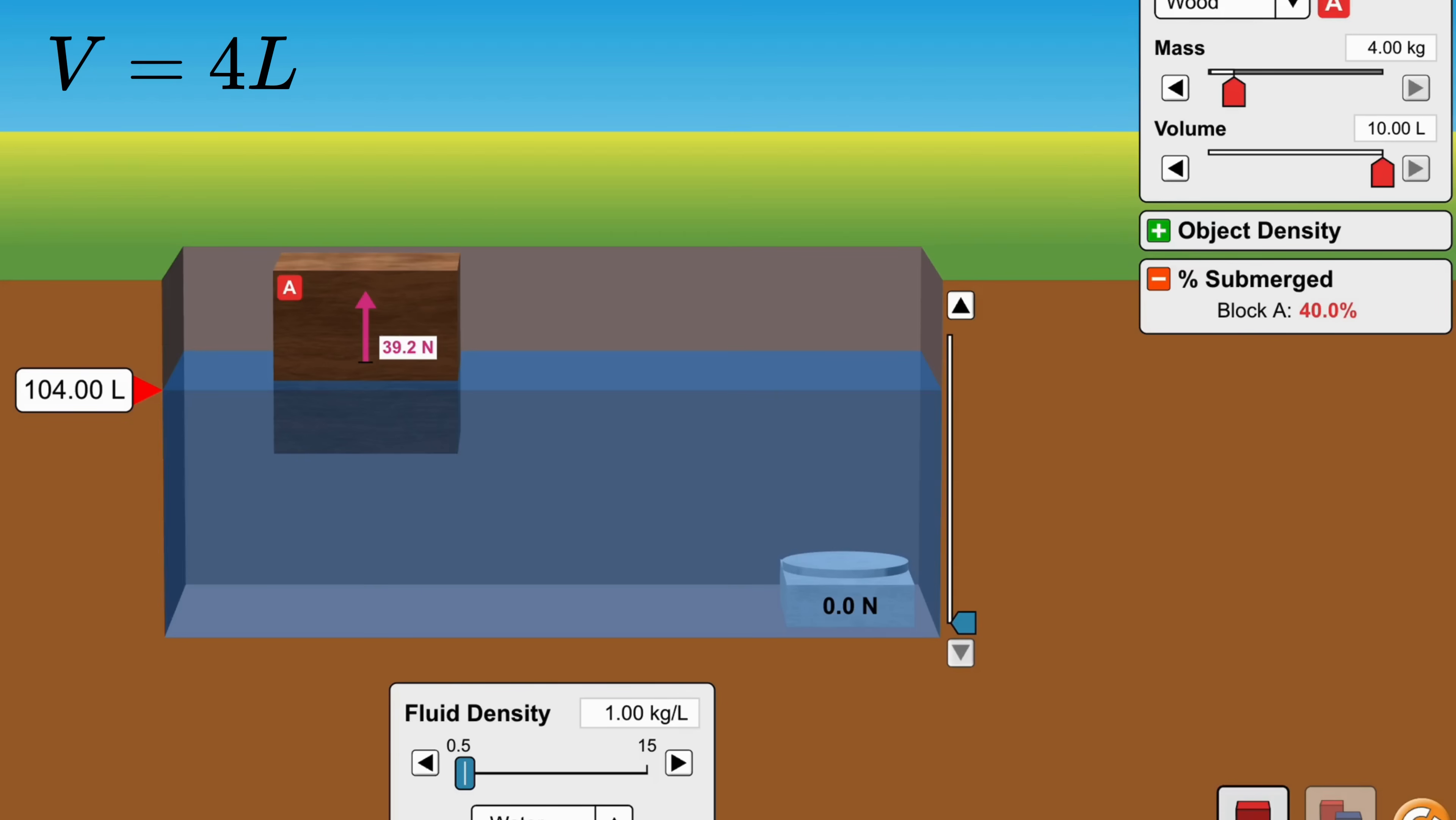This means the V in the buoyancy formula is not the total volume of the object, but only the volume of fluid displaced, which is exactly equal to the submerged volume of the object.